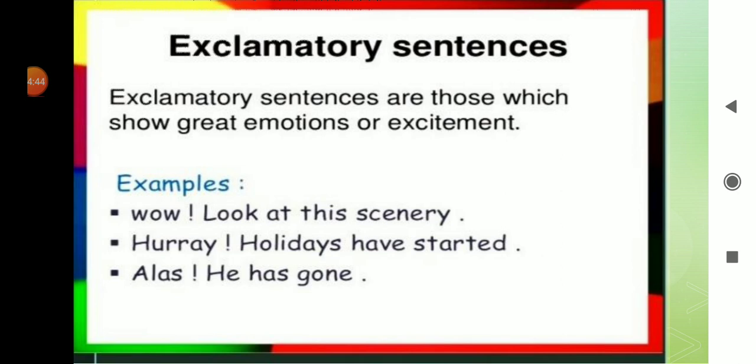Now, next one is exclamatory sentences. What's an exclamatory sentence? An exclamatory sentence shows great emotion or excitement. Exclamatory sentences are those sentences which show great emotions or excitement. For example, Wow! Look at this scenery. Hooray! Holidays have started. Alas! He has gone. There are three examples and all the examples are of exclamatory sentences.